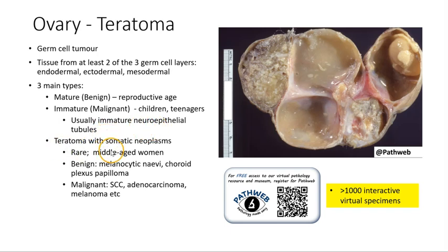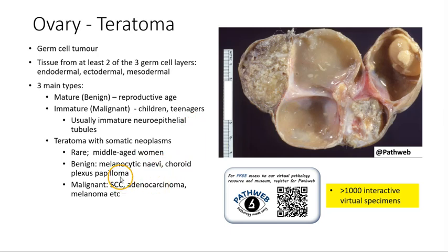There are also teratomas with somatic neoplasms arising within them. This is usually quite rare and occurs in a slightly older age group, in middle-aged women. The neoplasms can be benign, such as melanocytic nevi or choroid plexus papillomas, or malignant, including squamous cell carcinoma, adenocarcinoma, melanoma, etc.